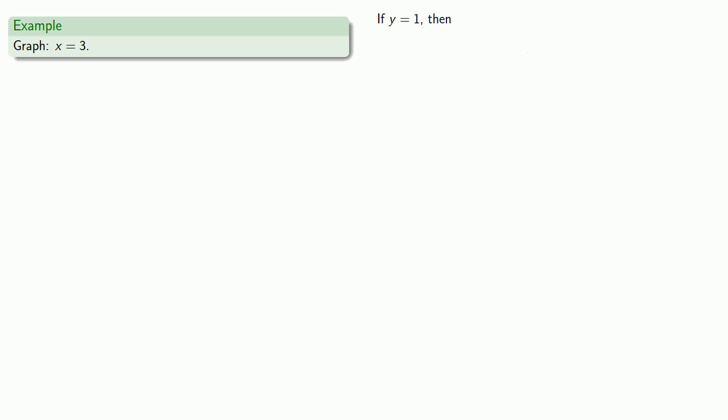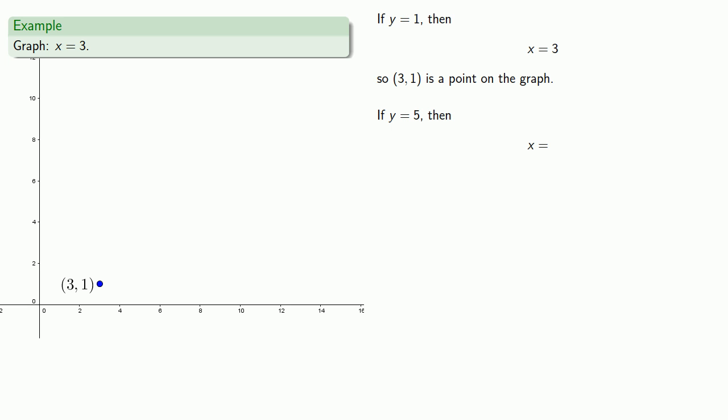So, if y equals 1, then formula says x is equal to 3, and so we know that the point 3, 1 is on the graph. If y equals 5, then x equals 3, so 3, 5 is a point on the graph. And if y equals 8, our formula says that x equals 3, so 3, 8 is another point on the graph. And if we connect the dots, we'll get our continuous curve.